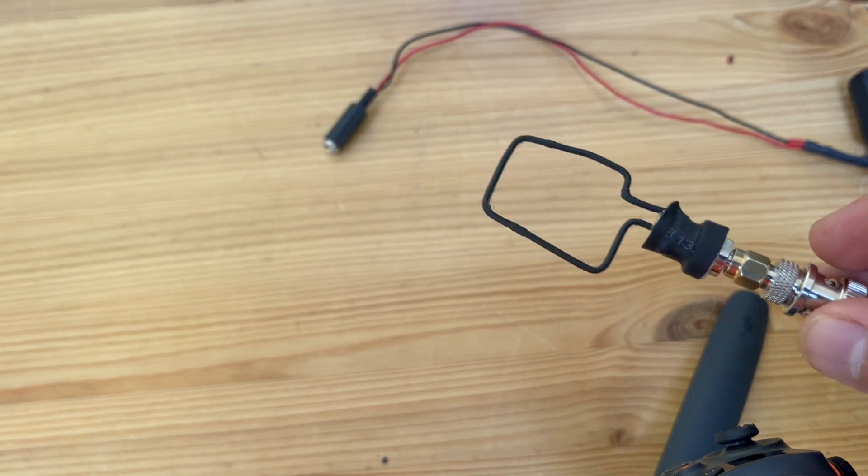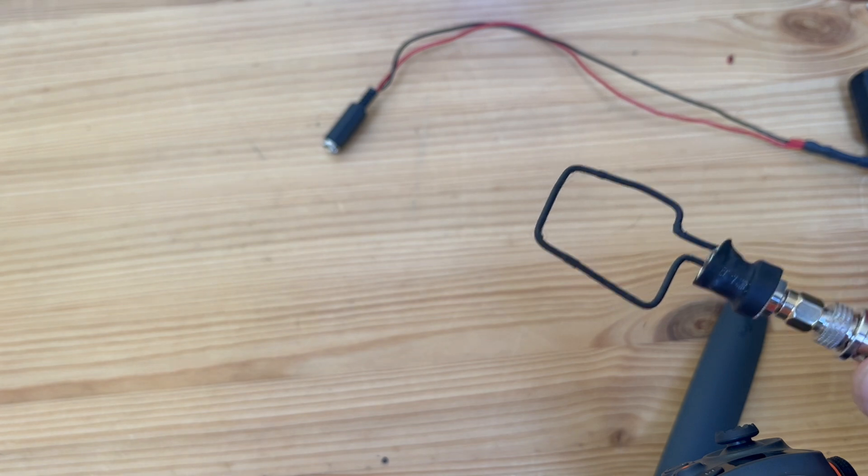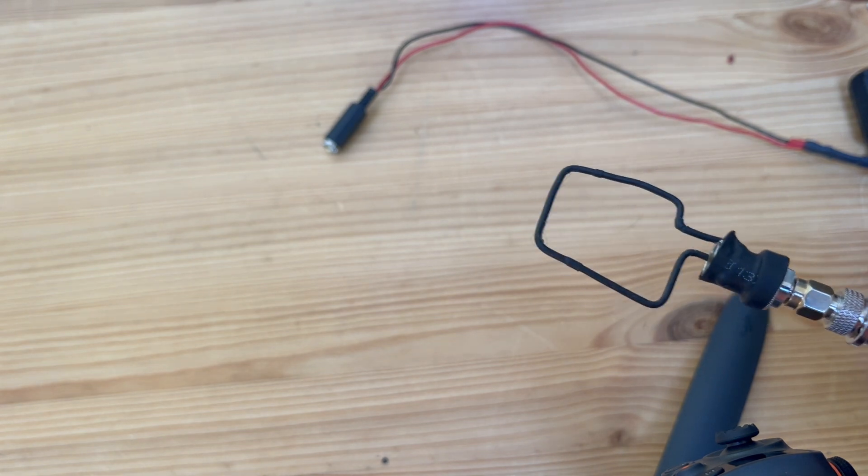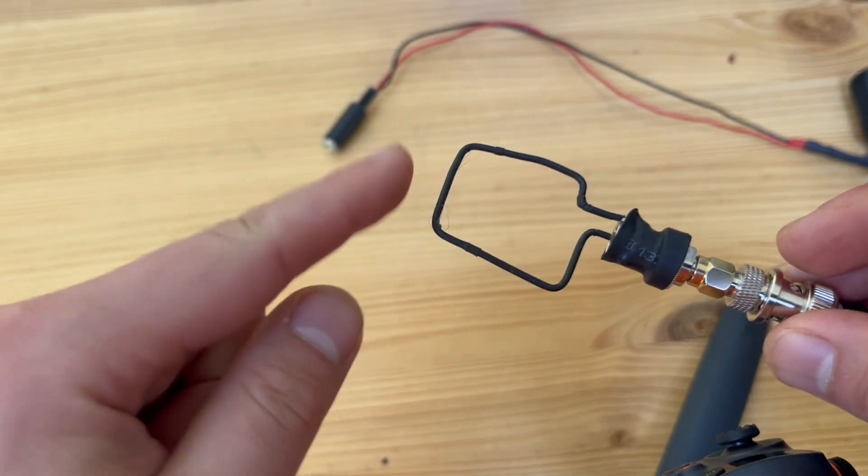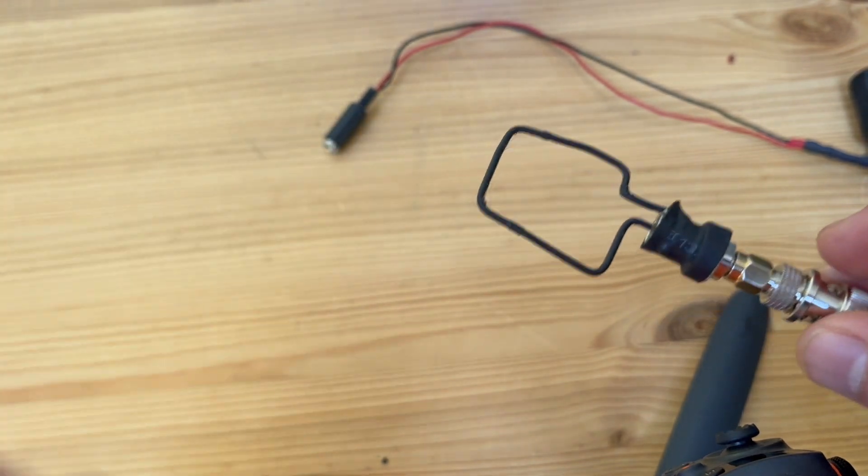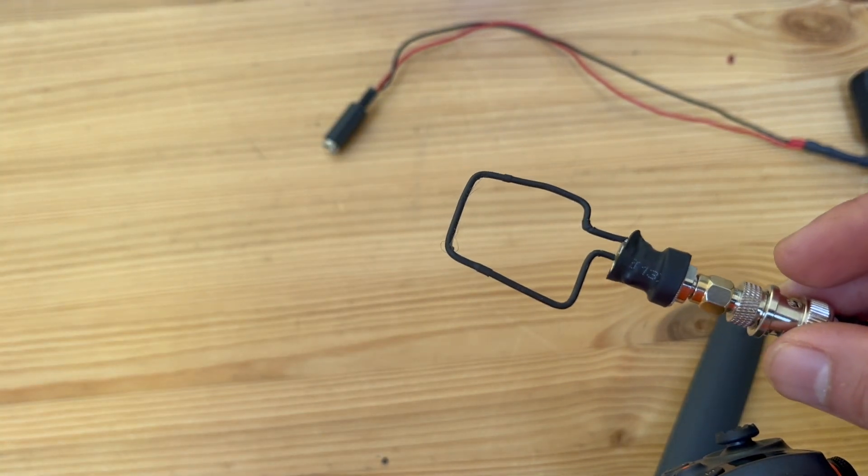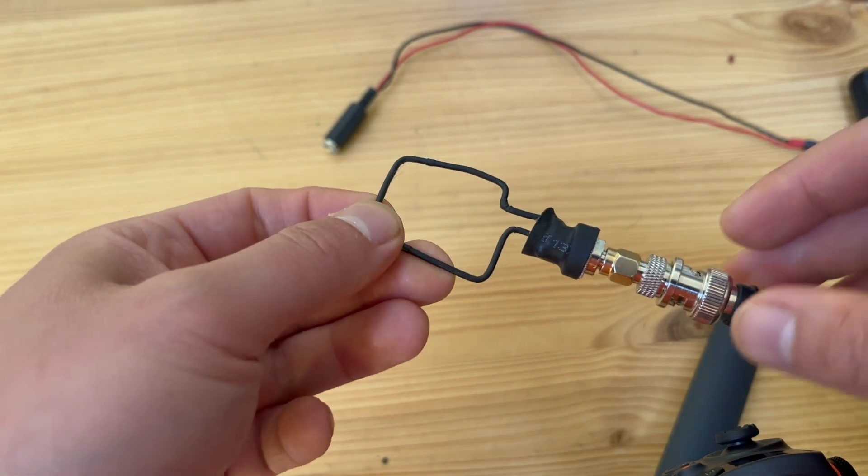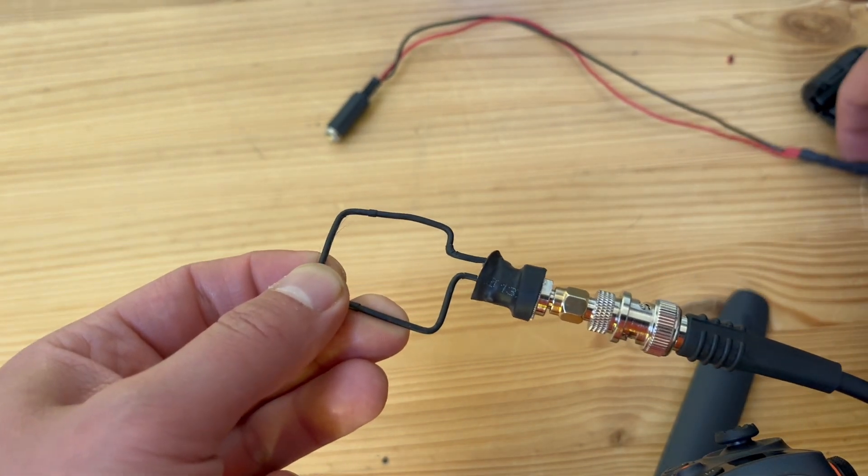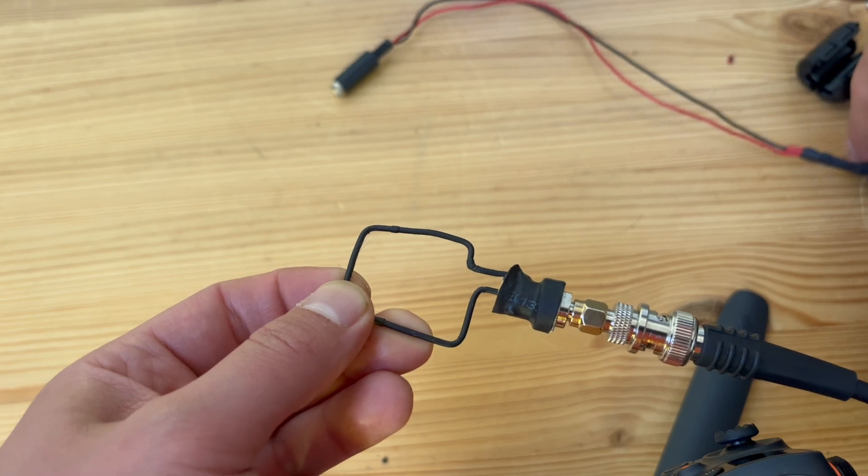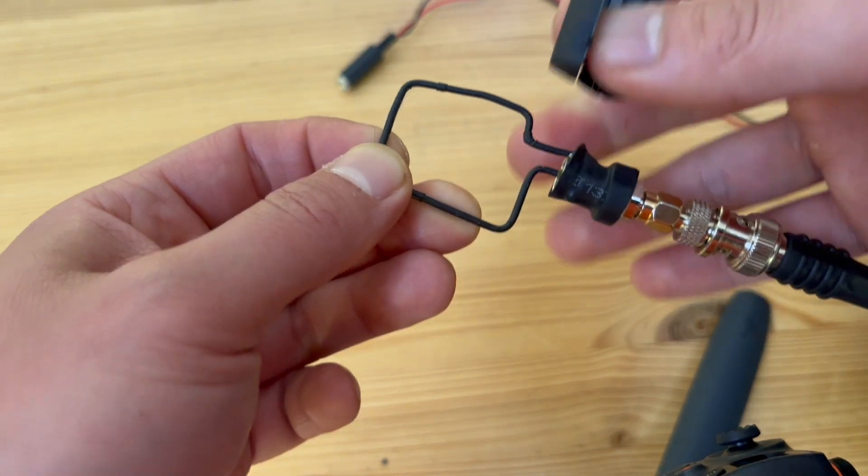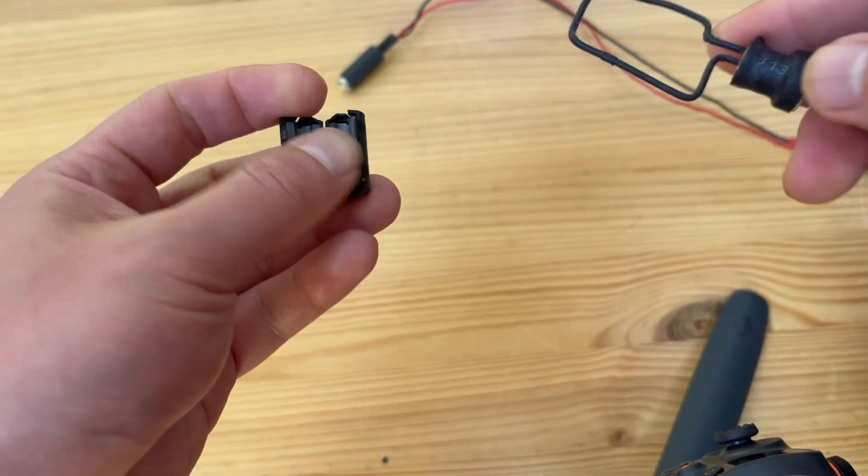If you really want to pick up more signals and make, or in other words, make this probe more sensitive, what can you do then? Well, we all learned from high school physics that if you really want to make a higher inductance, what you can do is start to introduce a magnetic core.